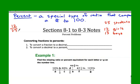If I wanted to find what percent of the class is girls, I would have to convert that fraction to a percent. I'd have to find a way to make the denominator equal 100, which we've done before when we converted fractions to decimals. One way is to multiply top and bottom by 4, so this would be 48% of the class is girls.